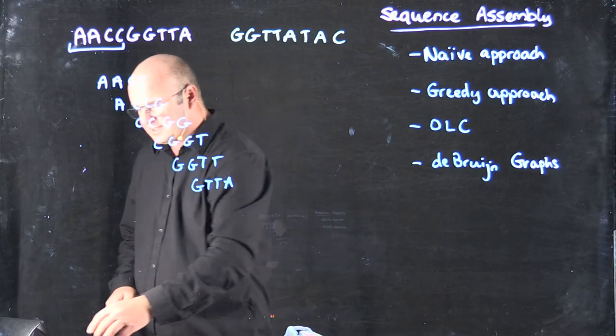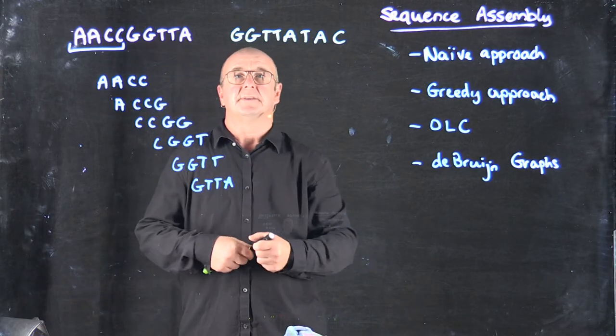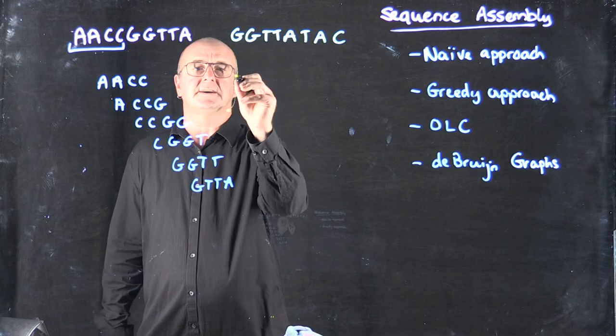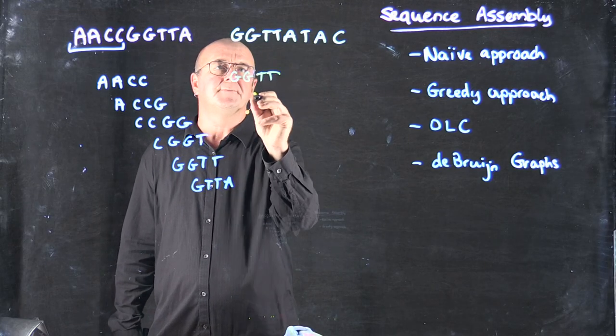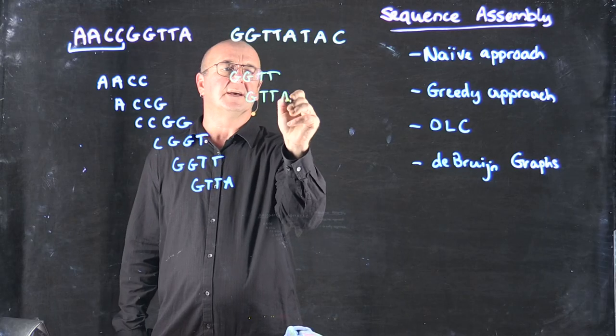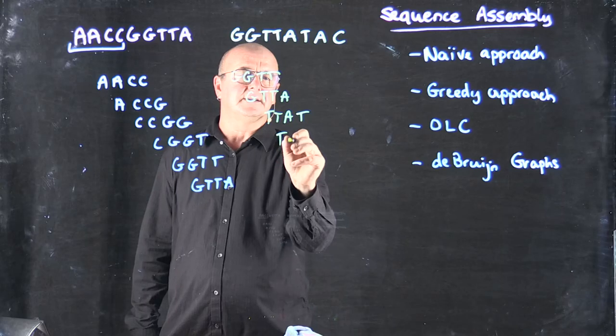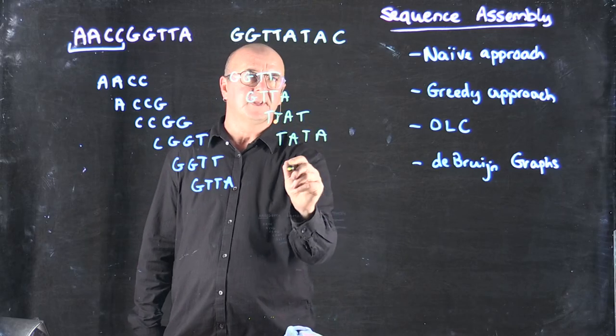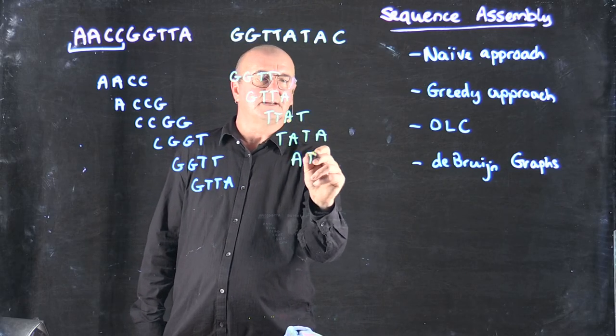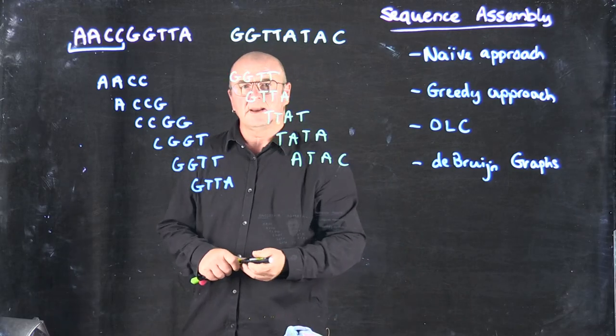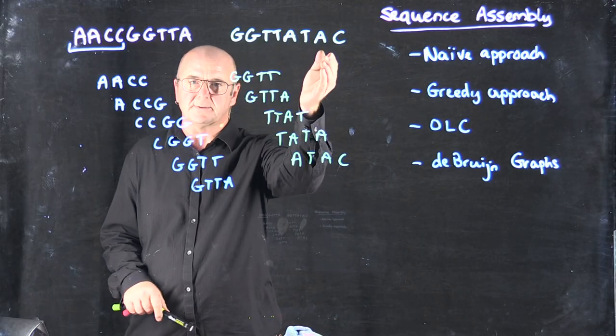I do the same from the second sequence. So I start with GGTT, GTTA, TTAT, TATA, ATAC. And again I have all possible 4-mers from the second sequence.